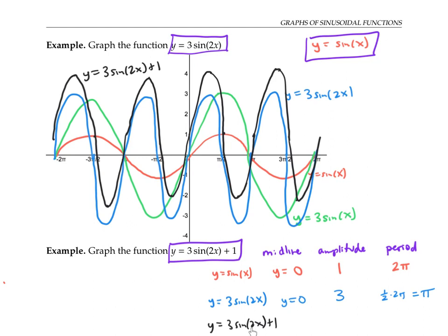Now for the third function, we've taken the second function and added one on the outside, so that shifts everything up by one. Therefore, instead of having a midline at y equals zero, we now have a midline at y equals one. The amplitude doesn't change — it's still three — because shifting everything up by one doesn't affect the distance between the midline and the maximum point. Also, the period is still pi, since the period is a horizontal measure, and adding one on the outside only affects the vertical things.